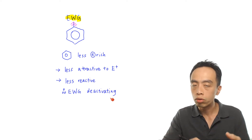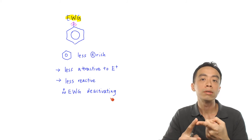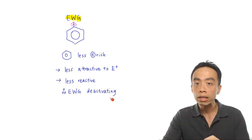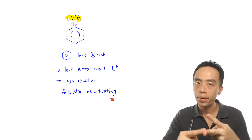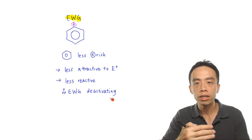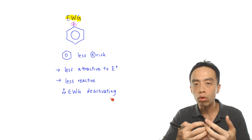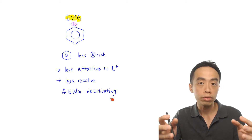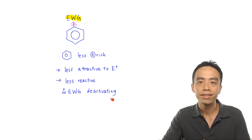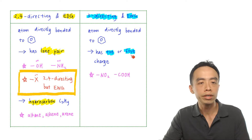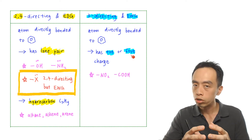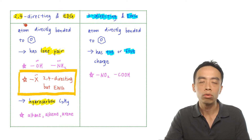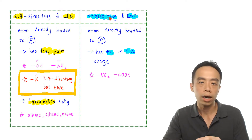When a group is attached to benzene, it has two effects: the position of substitution — either 2,4-directing or 3-directing — and it either activates or deactivates benzene. Now, if you give me a group attached to benzene, how do I know whether it is donating or withdrawing, 2,4-directing or 3-directing? We can summarize both ideas in a table. In general, all electron donating groups are 2,4-directing, and all electron withdrawing groups are 3-directing. So these two ideas are related to each other.